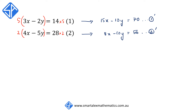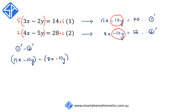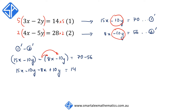We now have a common minus 10y term. Because both have the same sign — negative — instead of adding, we subtract: equation 1 dash minus equation 2 dash. This gives us 15x minus 10y minus 8x minus 10y is equal to 70 minus 56. We must expand the bracket: 15x minus 10y minus 8x plus 10y is equal to 14. The negative 10y and plus 10y cancel out, and 15x minus 8x gives us 7x is equal to 14.